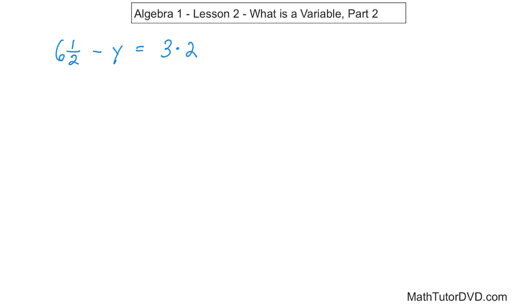Now remember, here in algebra we do multiplication. We can write it several ways. One of the ways we do it is with a dot. That means 3 times 2 on the right-hand side. So we have 6 and a half minus some number, we don't know what it is, so we call it y, is equal to 3 times 2.